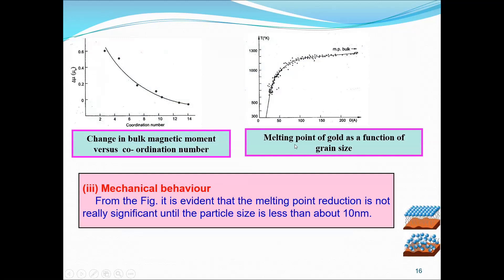Small particles have a low coordination number. From the figure it is inferred that small particles are more magnetic than bulk material. The graph shows the melting point of gold as a function of grain size — smaller grain size corresponds to lower melting temperature, while larger grain size corresponds to higher melting point of the bulk material.